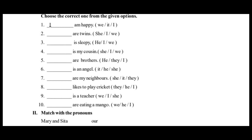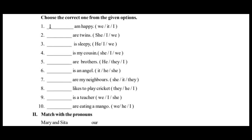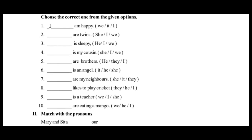Every sentence has a blank. You can fill that blank. The first one has been done for you. What's the first one? 'I am happy.' If you say I am happy, you can fill that sentence. Three options: We, it, I. It is not followed by 'I am happy.' We and it do not fit. The answer is I.